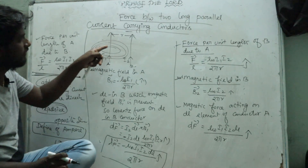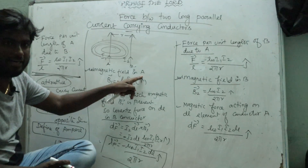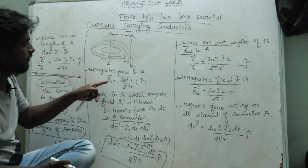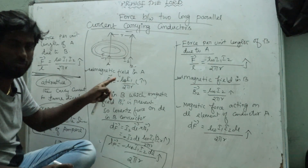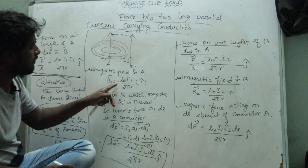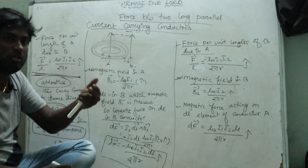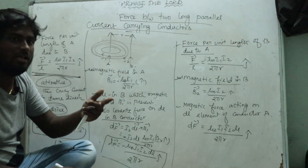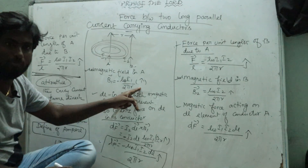What is the magnetic field? The magnetic field B1 due to conductor A at the location of conductor B is given by: B1 = μ₀I1 / 2πR. The direction of this magnetic field is along the negative x-axis, that is, the negative î cap direction.